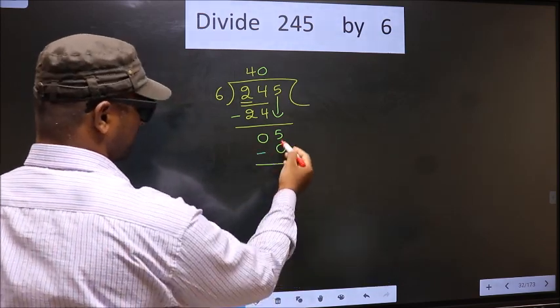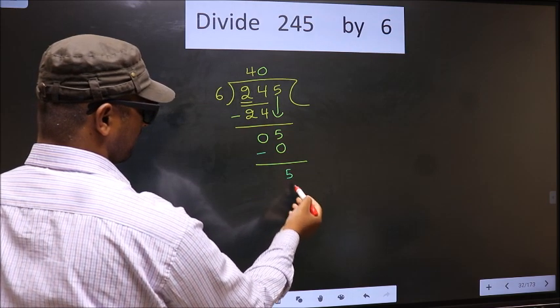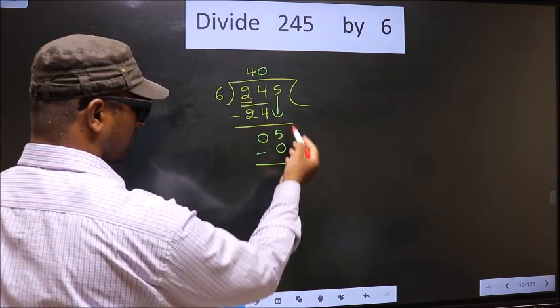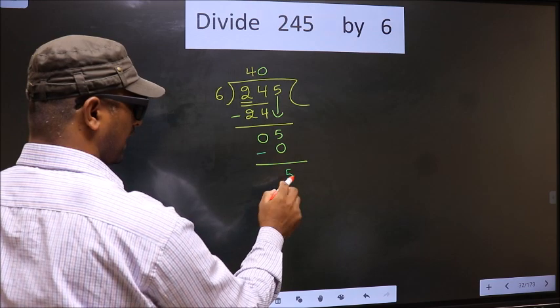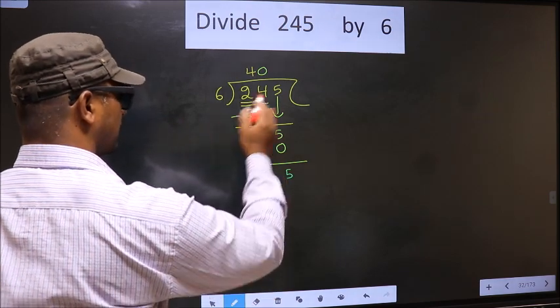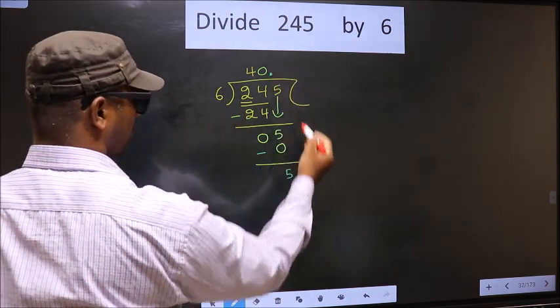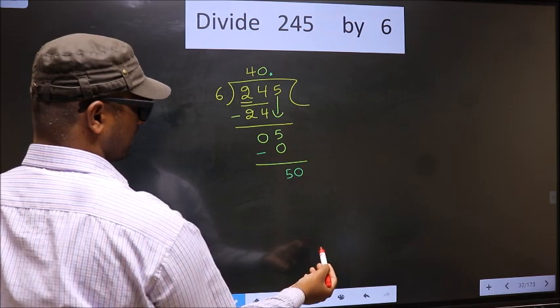Now, you subtract. 5 minus 0, 5. Now, over here, we did not bring any number down. And 5 is smaller than 6. So, we put a dot and take 0 here.